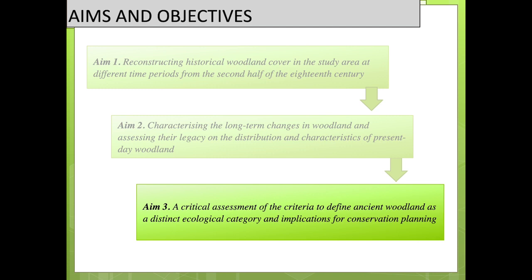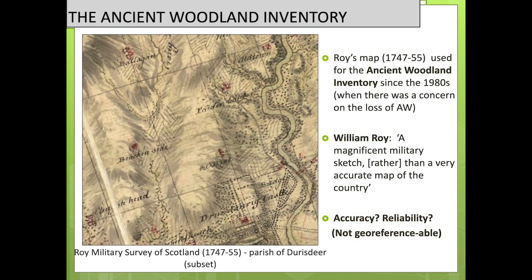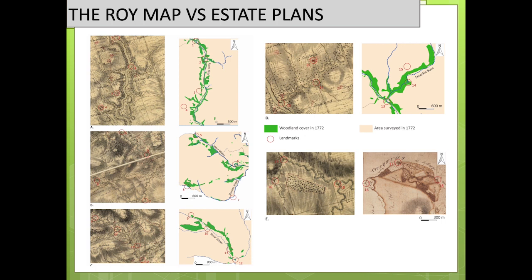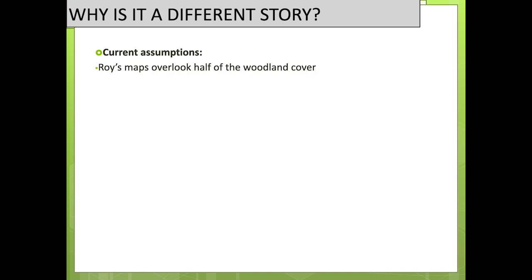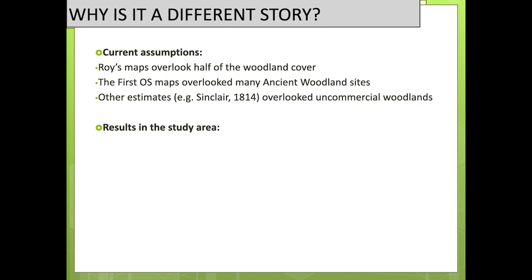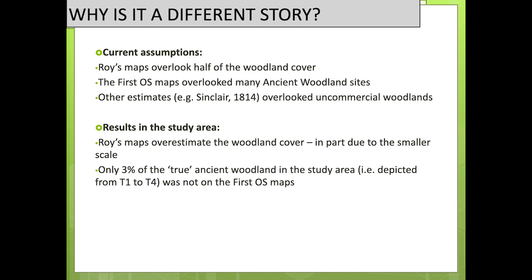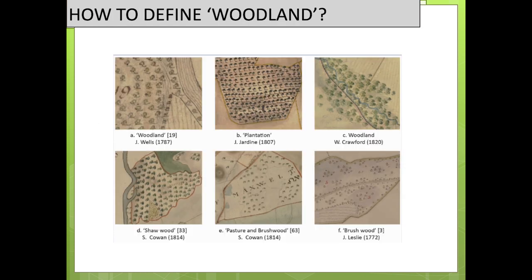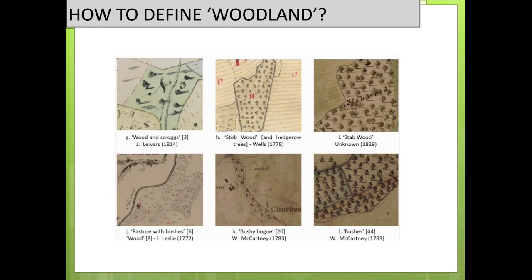Now I'm going to discuss ancient woodlands. There is an ancient woodland inventory of Scotland, and one of the main sources for this inventory is the Royal Military Survey of Scotland. We define ancient woodland in Scotland as an area that has been continuously wooded since at least 1750. These areas are recognized as having particular biodiversity, ecological value, and cultural value — that's why many countries have an ancient woodland inventory. The problem with the Roy map is that there are questions about its accuracy, particularly for the depiction of woodland, and Roy maps — contrary to estate maps — are not easily georeferenced, making it difficult to overlay them on modern maps.